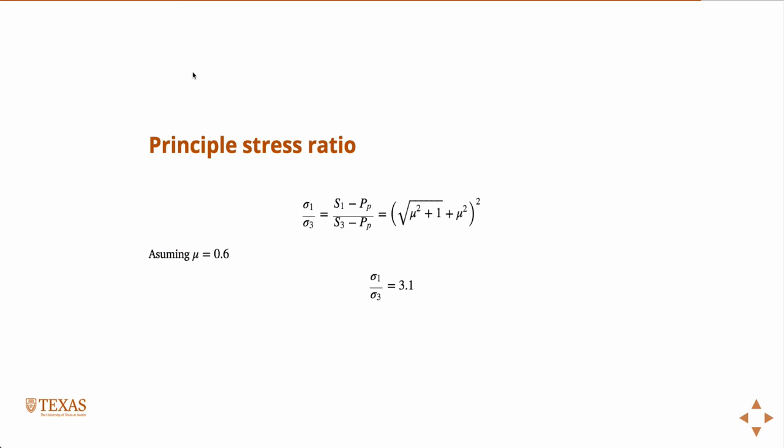So, we have to bound the stress based on the fact that these faults are going to slip. Then, the maximum stress difference we can have is about 3.1. And so, this can be useful for bounding the stress, or if say, S_V is the vertical stress, we're in a normal faulting regime, S_V is the normal stress.